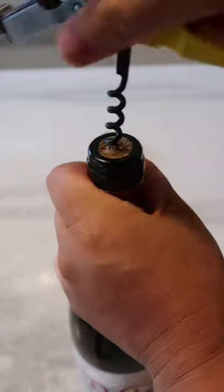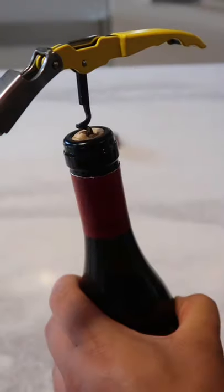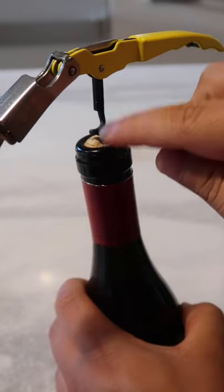Next you want to insert the corkscrew into the cork and turn it clockwise about six half turns, but make sure you leave one curl open on top of the cork.